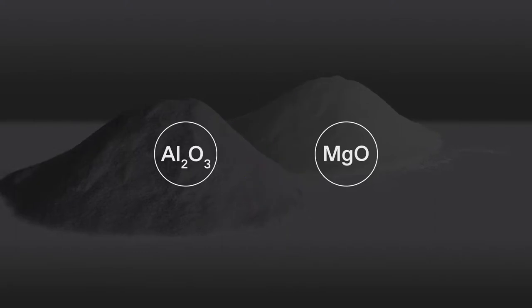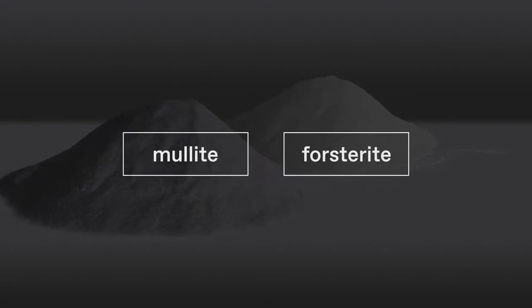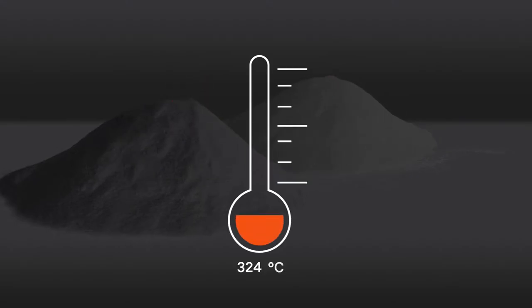Microsilica reacts with fine alumina or magnesia to form a mullite or forsterite, providing a refractory with improved strength at high temperature. Addition of Elkem Microsilica is shown to significantly improve the flowability of refractory castables.